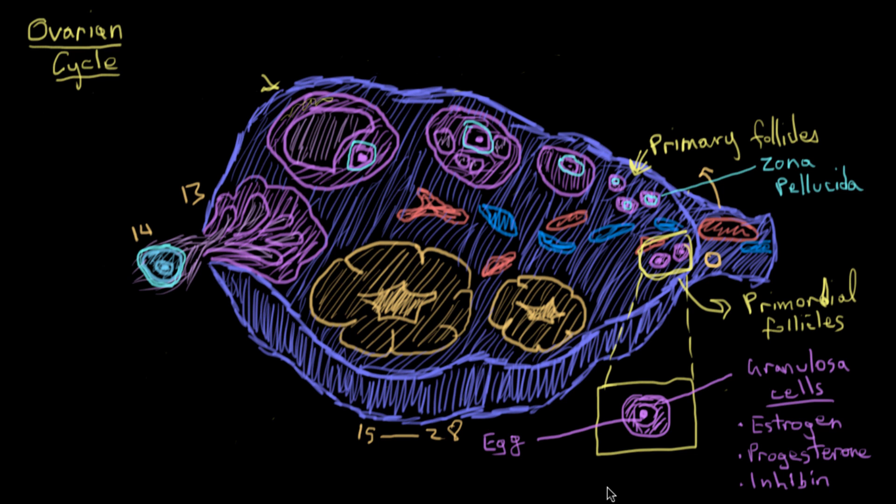Now even though the zona pellucida is there, separating the granulosa cells from the actual egg, the granulosa cells can still nourish the egg through gap junctions that go through the zona pellucida and into the egg. Gap junctions are just little passageways from one cell to another cell where they can exchange nutrients or other signals. And actually, through those gap junctions, the granulosa cells send through little chemicals